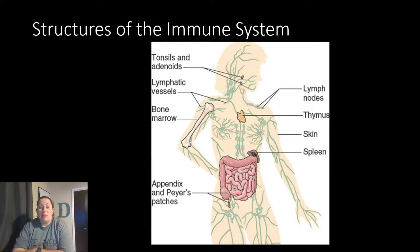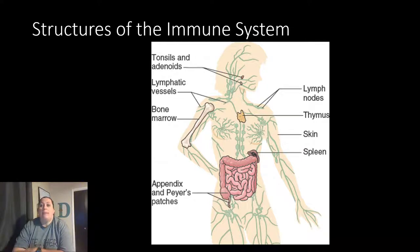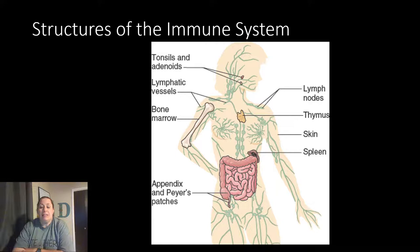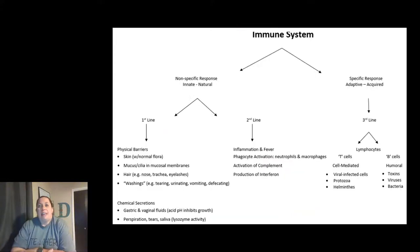The reason the thymus gland and bone marrow are listed here is because they are responsible for either making or training your specific immune system. The bone marrow is going to make all of your white blood cells because that's where the stem cells are located. Some of those are going to go to the thymus gland to be trained — trained in knowing what your cells look like versus what foreign cells look like — and that's where our specific immunity comes into play, specifically with the T cells.